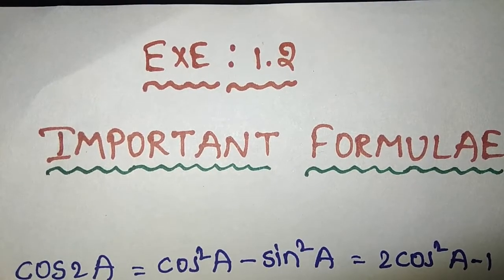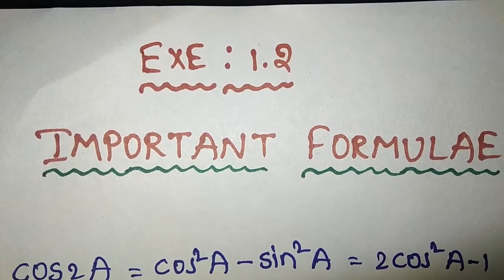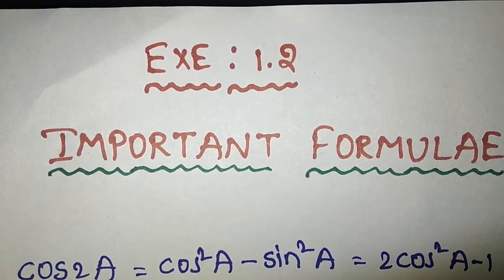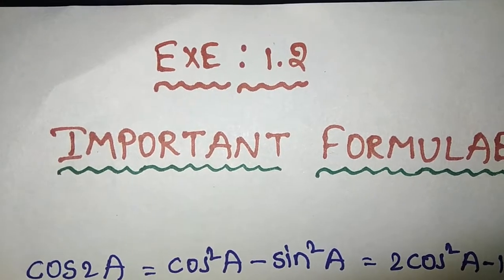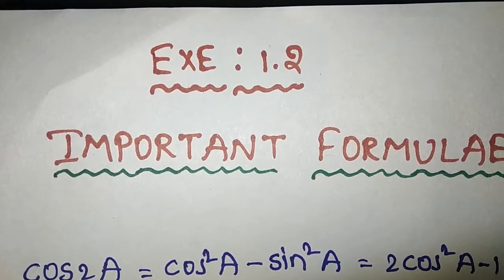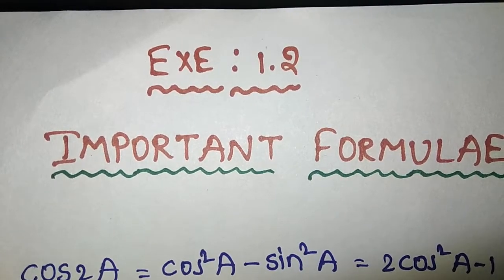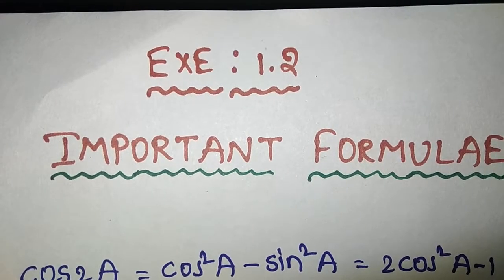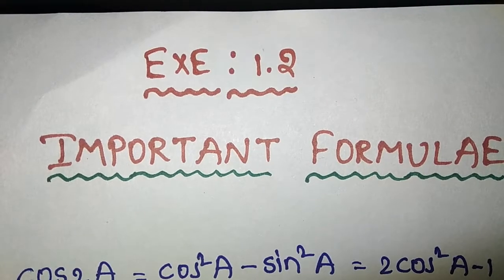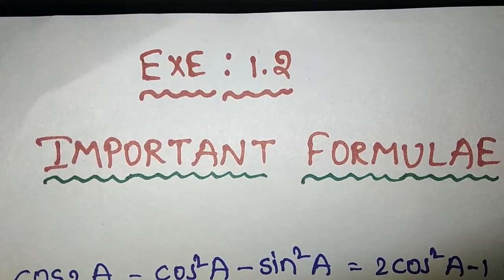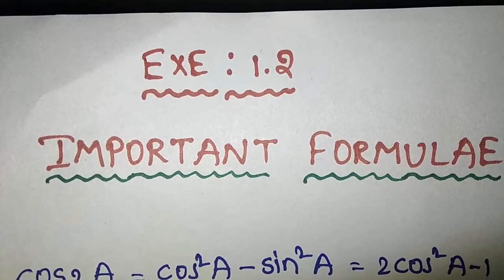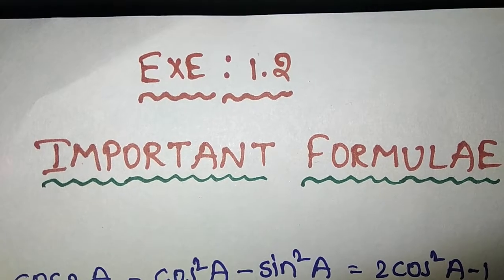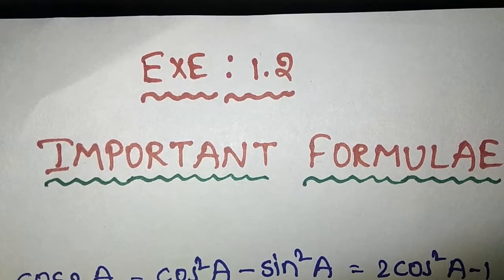The top question is: how can you find the problems in this 1.2 exercise? We have a substitution method, and we need to do this for number one. We need to use the letter T and learn a formula. First of all, we are going to explain these formulas.